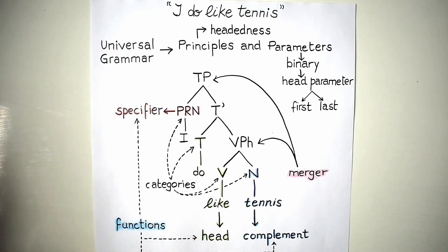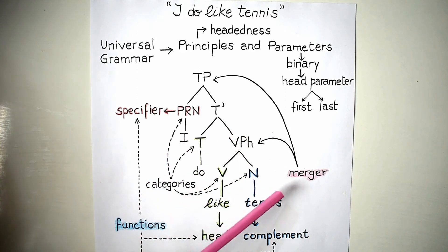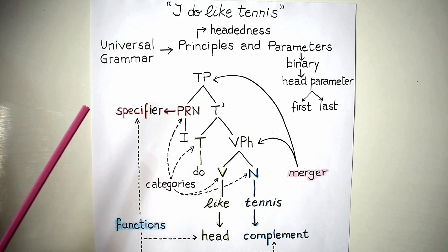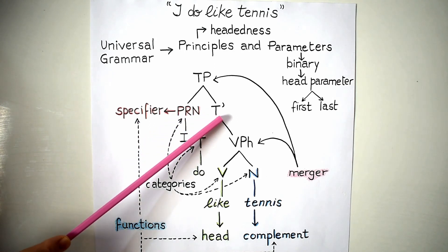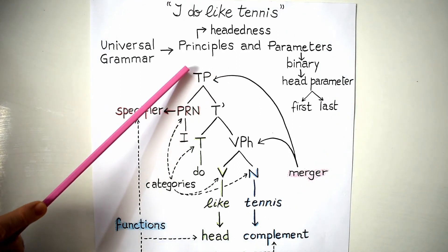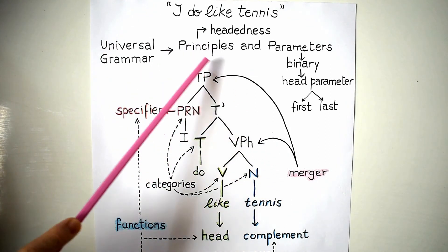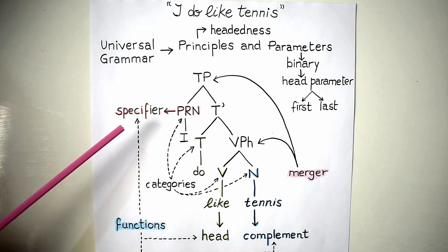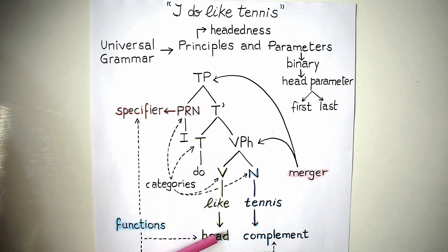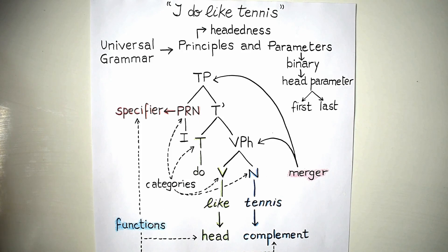We want to stop here because if you look at the tree and move upwards and to the left, you'll notice that the next stage is the merger of the verb phrase with a T or tense constituent — in this case, emphatic 'do.' Then you'll see something called T-prime, and T-prime then merges with the pronoun 'I' to make up a tense phrase. That phrase is different from our verb phrase and it will take some time to discuss. So next class we will talk about the two ways of forming phrases: head-complement or head-complement-specifier, as you can see in the picture.